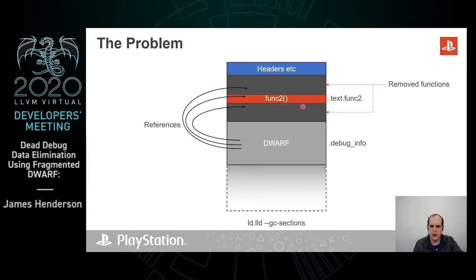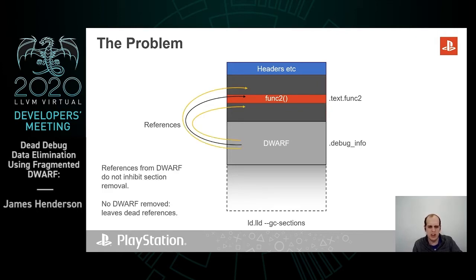Why is splitting of sections good? It allows the linker to do GC sections — to remove the excess sections if they are unreferenced. Note that the DWARF does not inhibit section removal, but because it's one big blob it also doesn't have any bits removed.